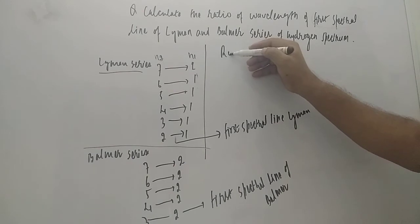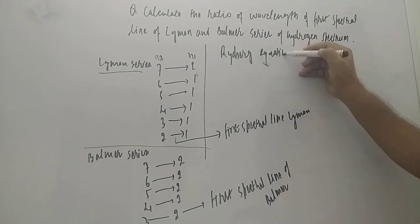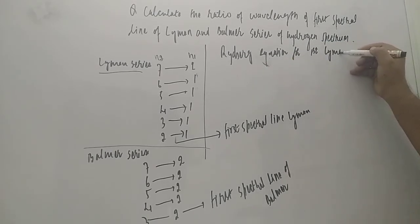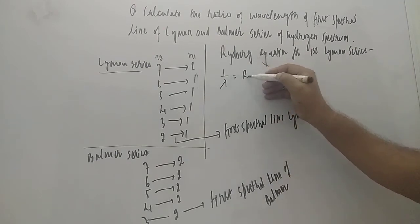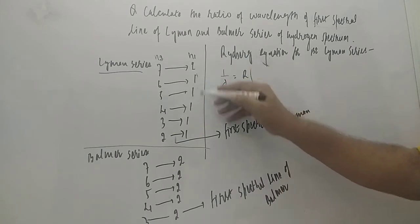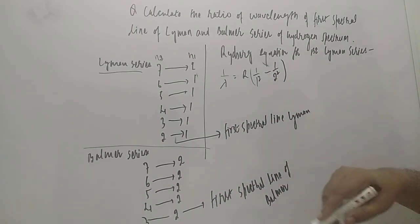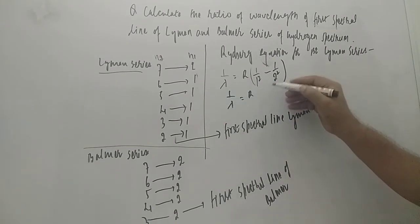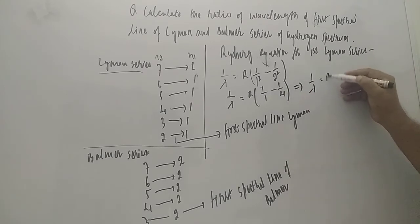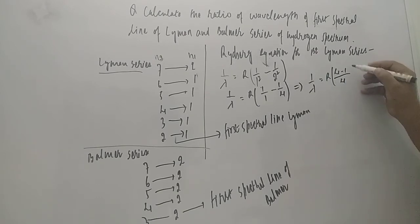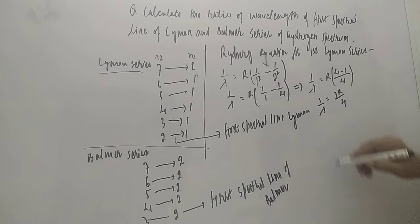Using the Rydberg equation for the first Lyman series line: 1 by lambda equals R times (1 by 1 squared minus 1 by 2 squared). Simplifying: 1 by lambda equals R times (1 minus 1 by 4), which gives 1 by lambda equals R times (4 minus 1 upon 4), so 1 by lambda equals 3R upon 4.